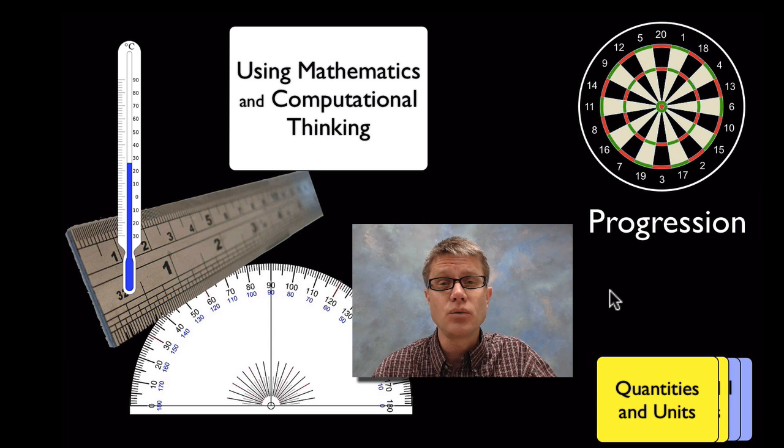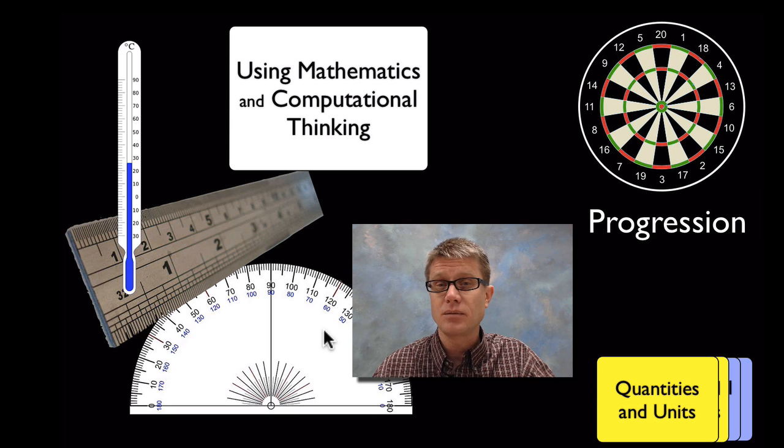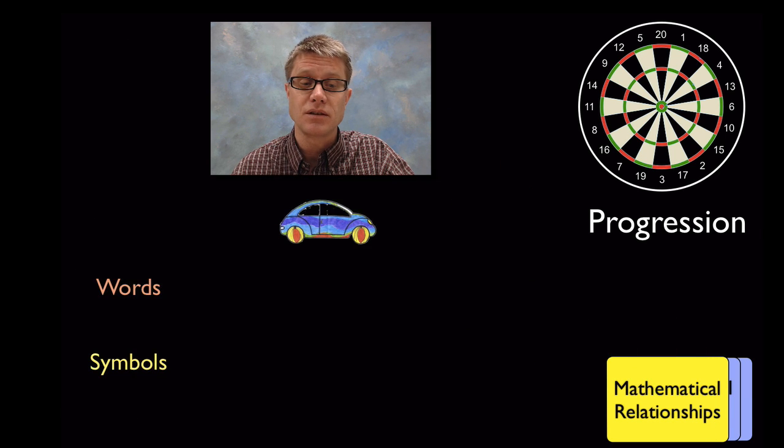And so according to the framework a good way to start is to actually start them with quantities and units from day one. So the moment that they can count they should be using rulers and thermometers and protractors to actually be making measurements. And those measurements should have proper units that go along with them. They should also be collecting data as soon as they can and organizing that data into some kind of a chart. As soon as they can they should be using spreadsheets if that's available.